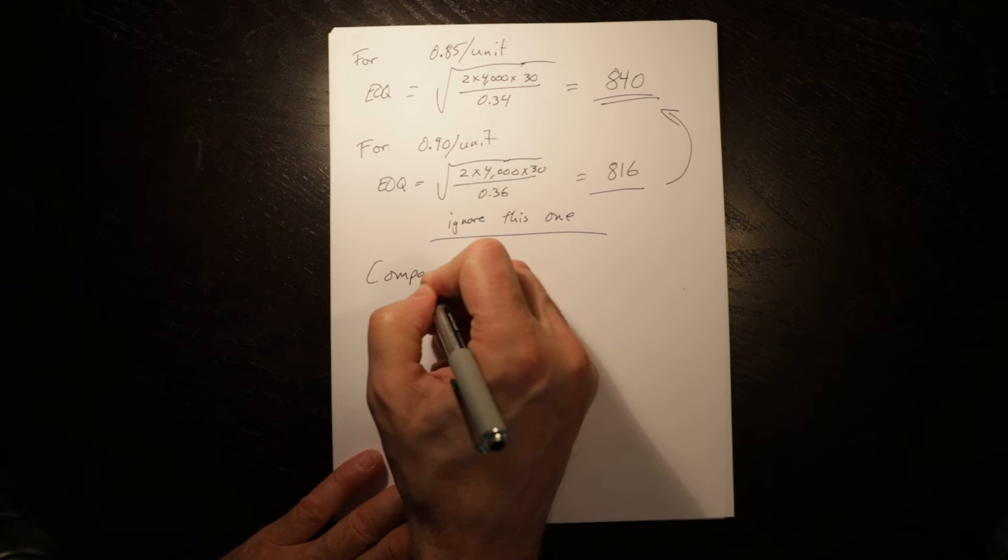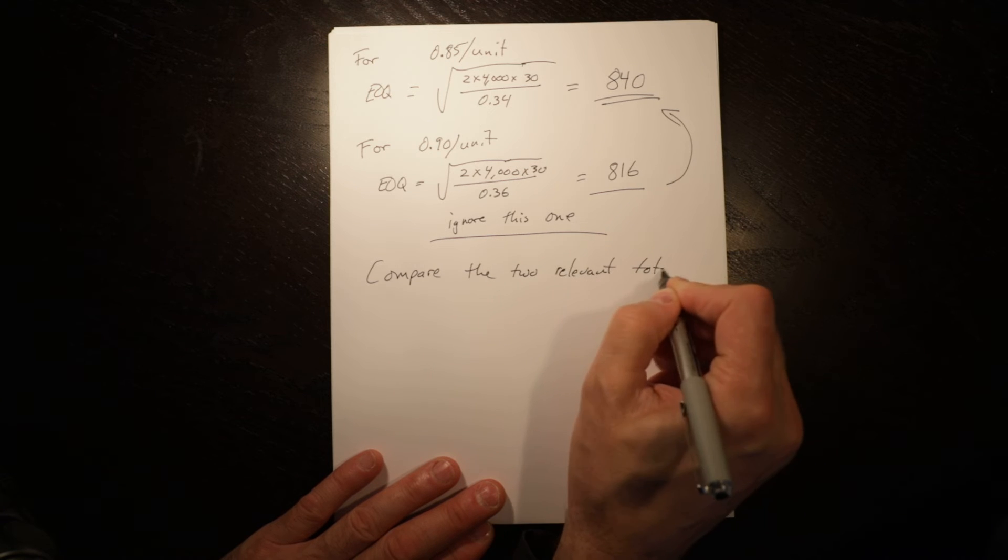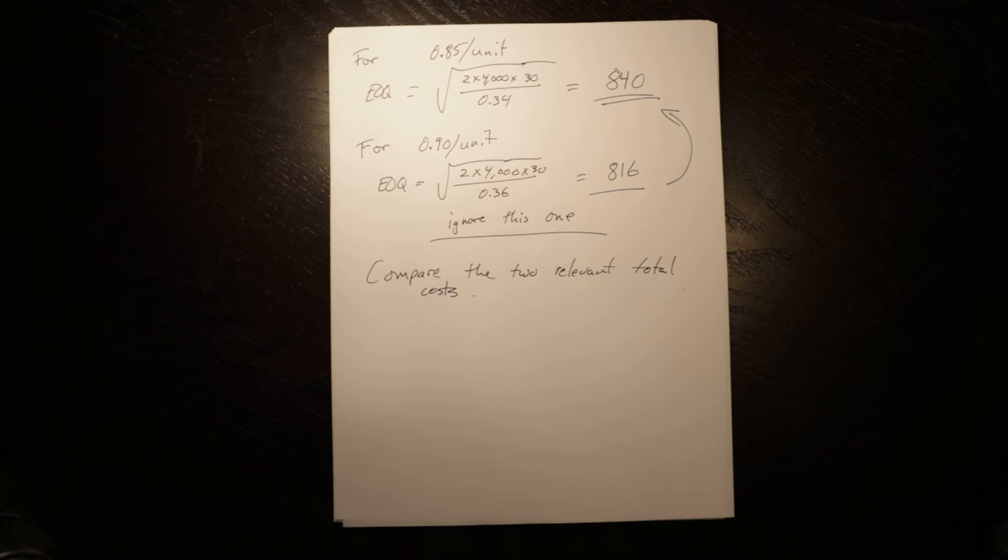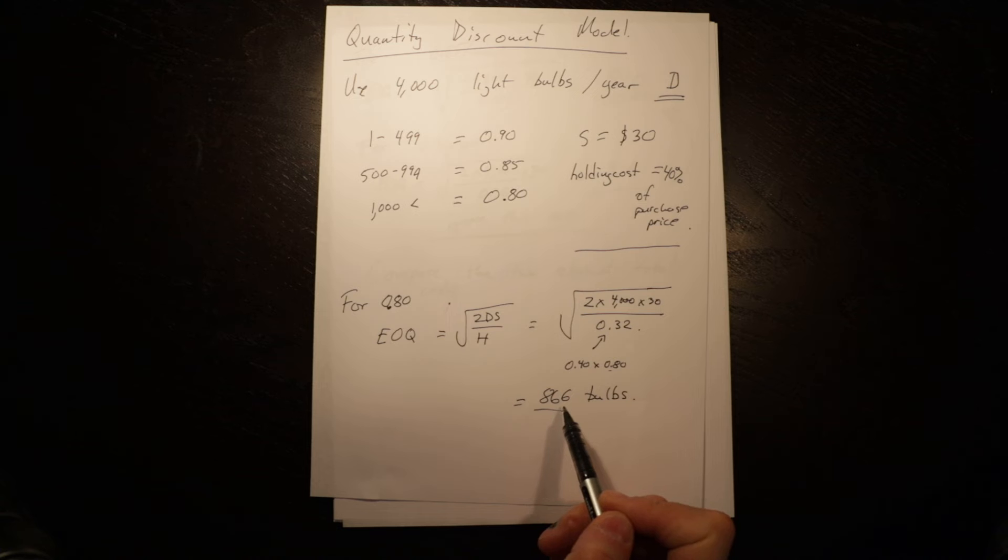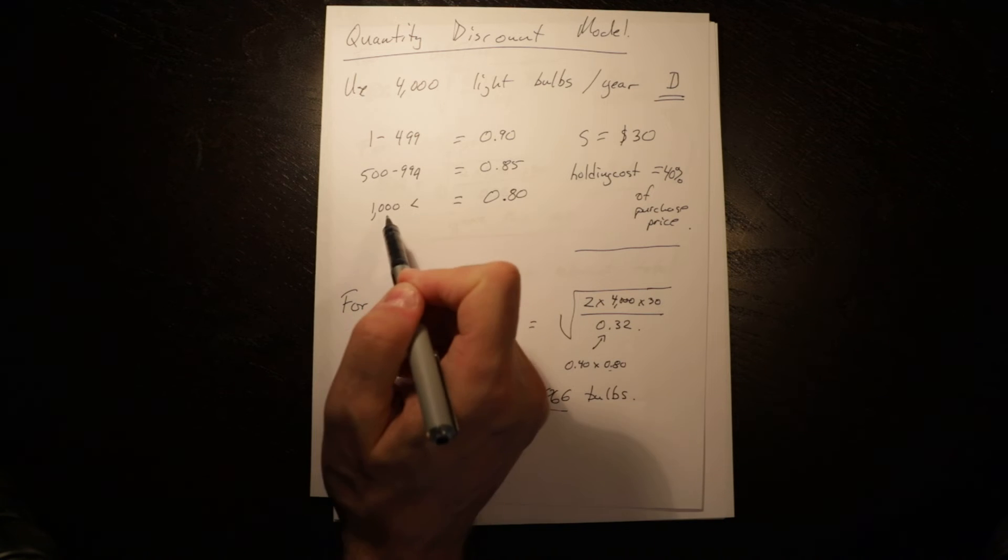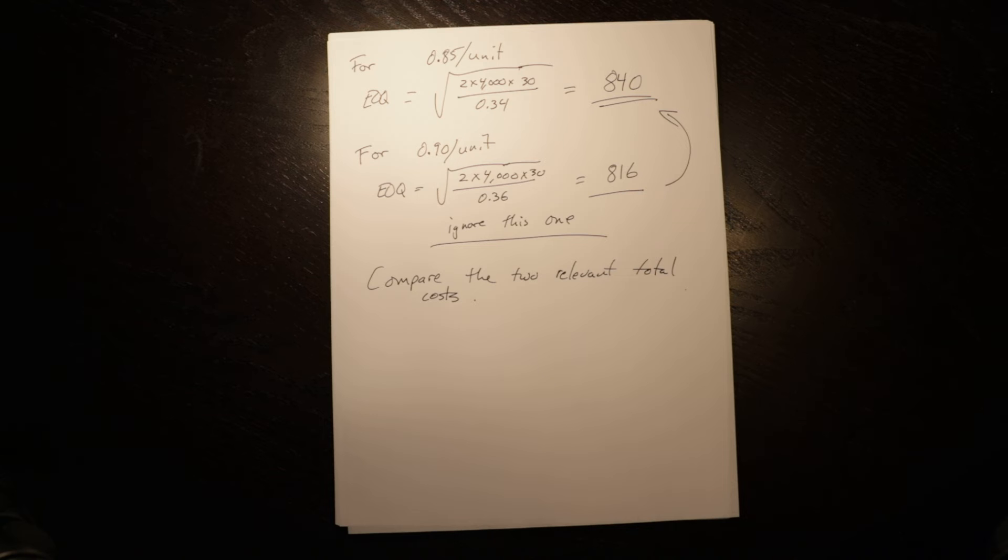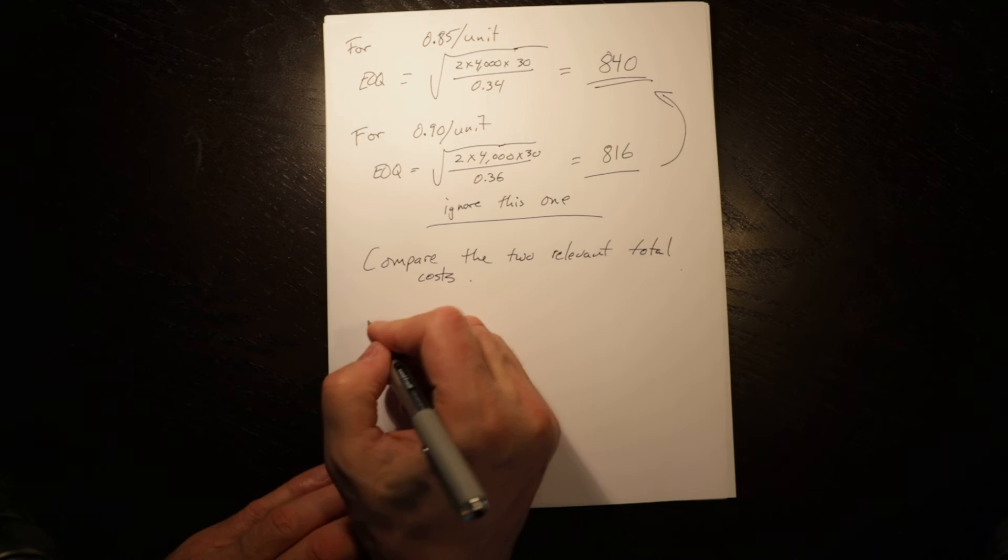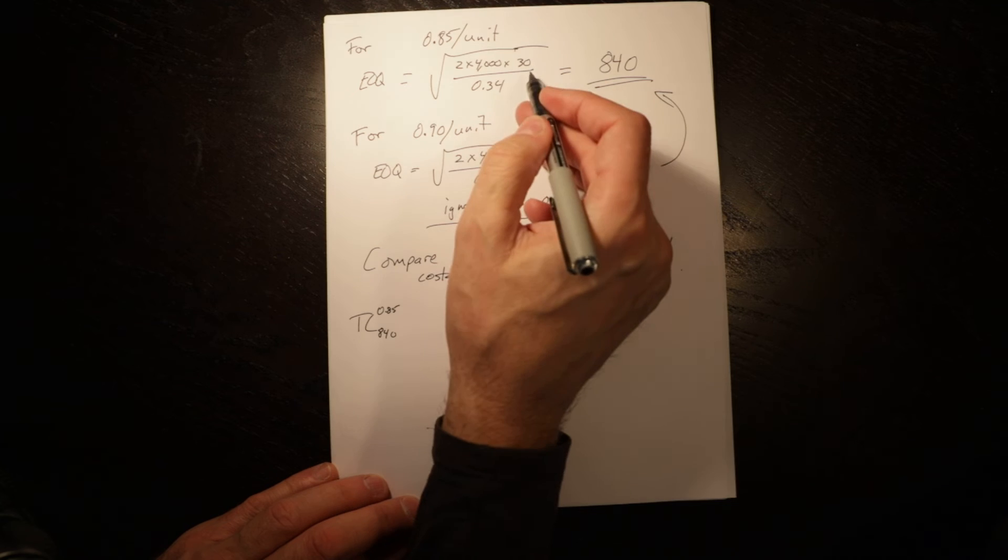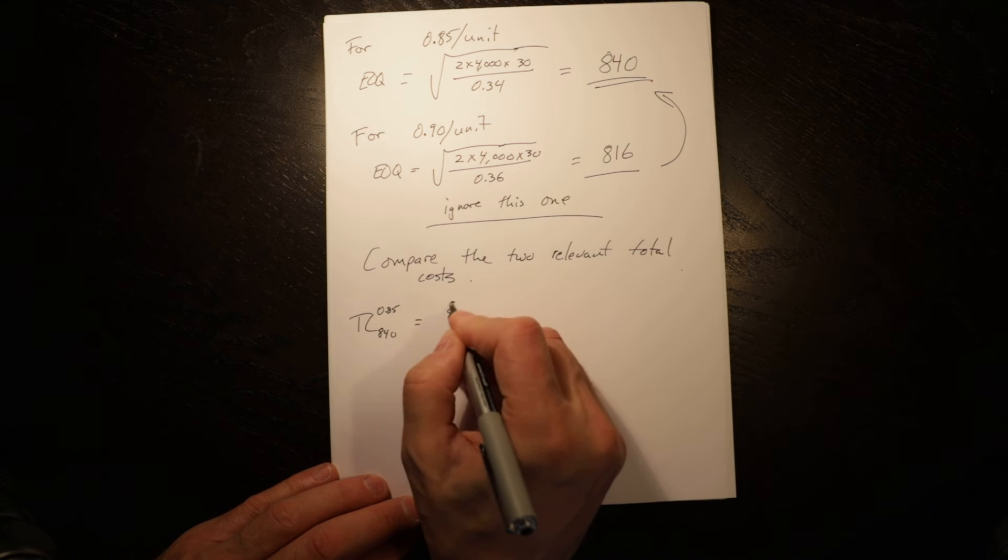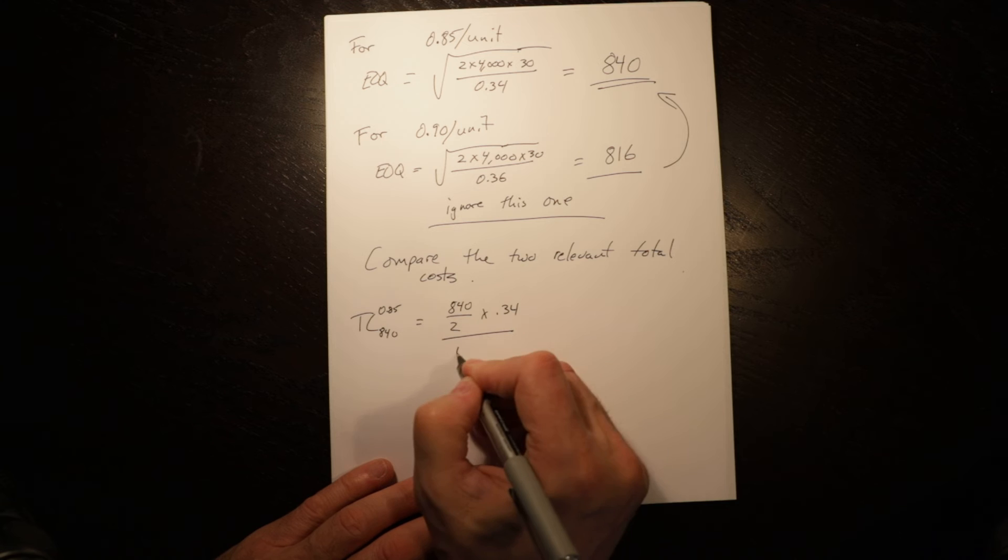Now we need to compare the two relevant total costs. At 80 cents, the economic order quantity was 866, which was too low, so we have to evaluate the total cost at a thousand, which is the only way we can get that discount. Let's look at total cost for 840 units costing 85 cents.